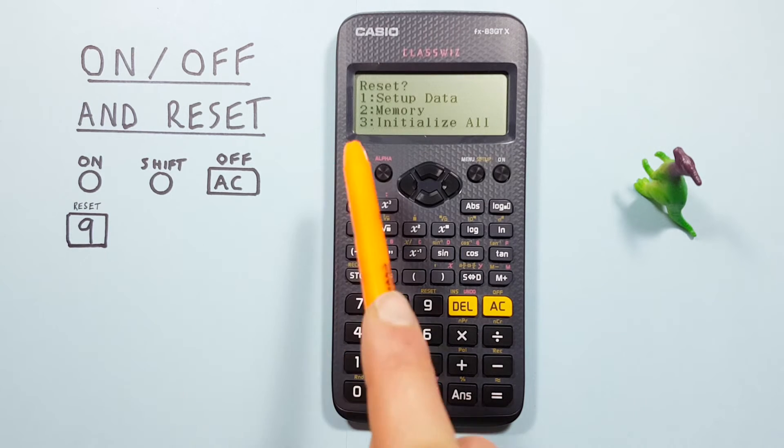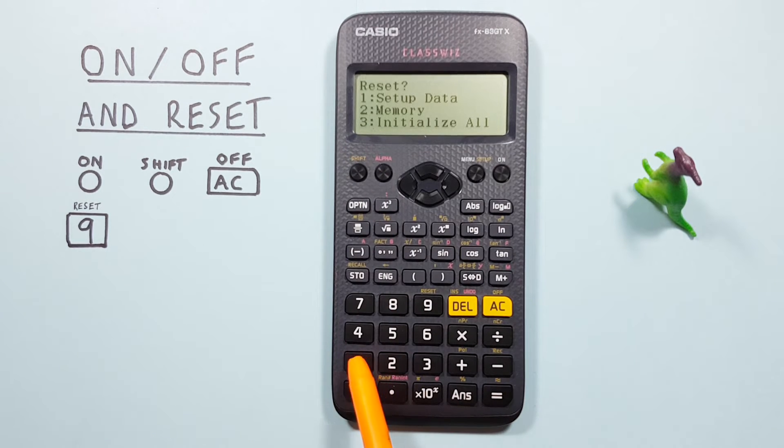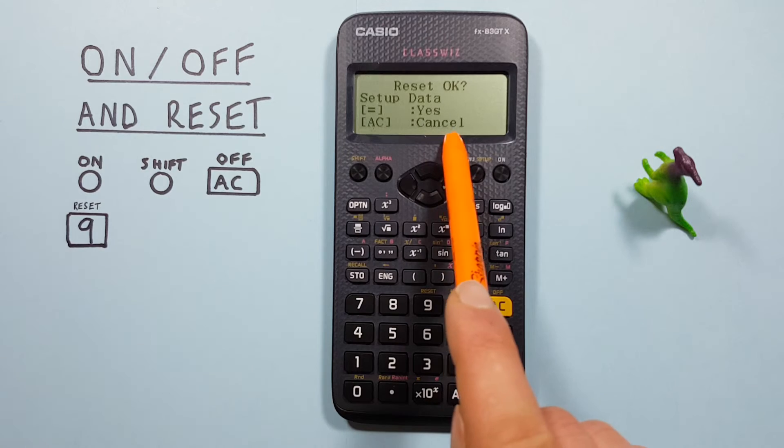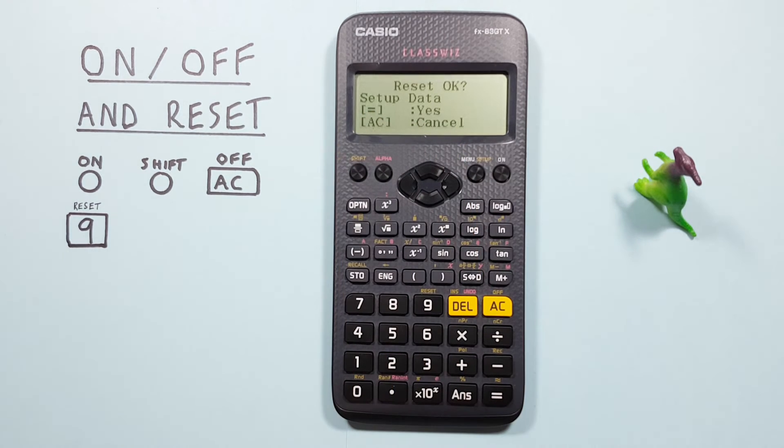Let's do number 1 to reset our settings. So we press 1, and we get to this screen here where it asks us to confirm: equals for yes, or AC to cancel. We want to reset, so we'll press equals.